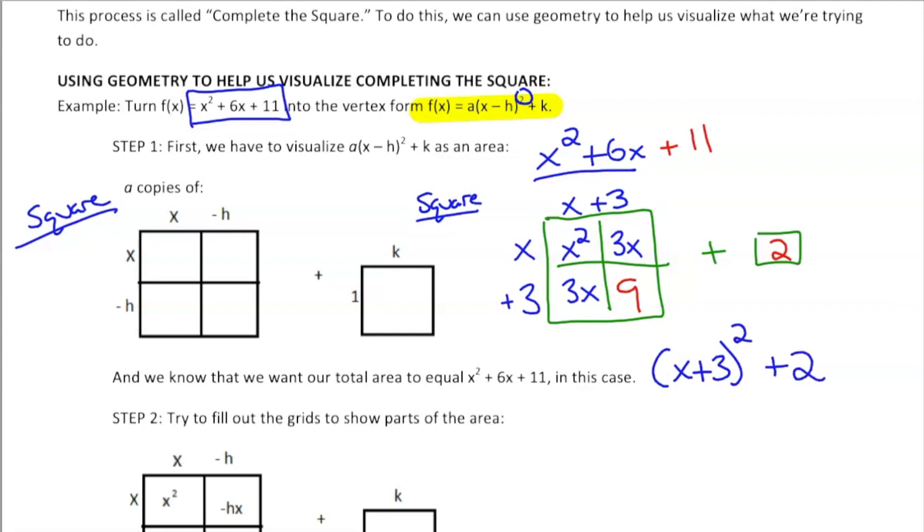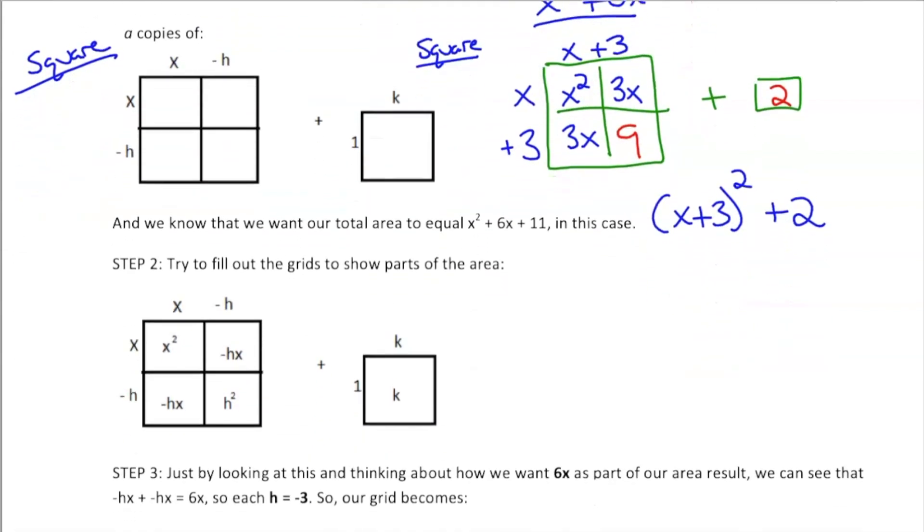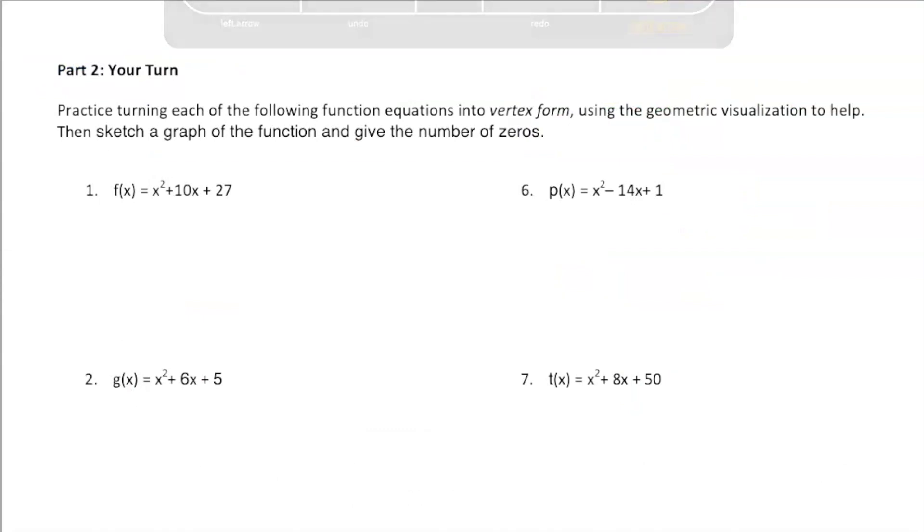In this lesson, we're also going to ask students to sketch these, just do a quick sketch and give the number of zeros. Maybe something like, we know this vertex would be negative 3, positive 2. It would be concave up, so just a quick sketch like this, and this one would have no zeros. So students are going to get to practice that. They really do enjoy this. They like seeing that square plus a constant.